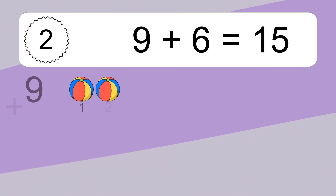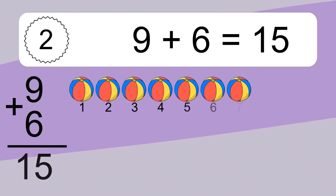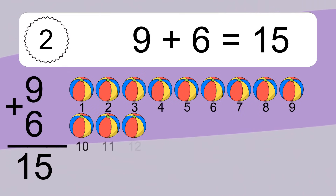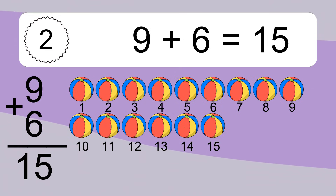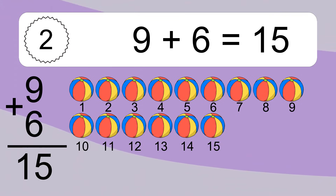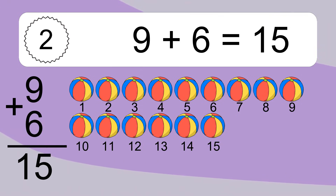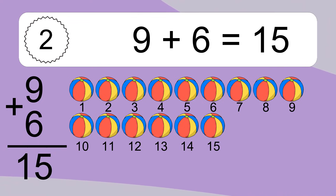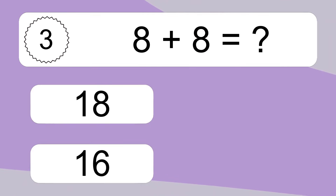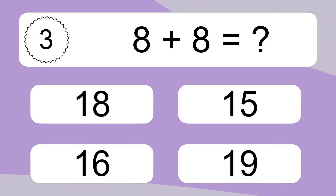Nine plus six equals what? Nine plus six equals fifteen. Let's count it: one, two, three, four, five, six, seven, eight, nine, ten, eleven, twelve, thirteen, fourteen, fifteen.